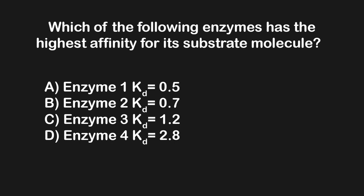Now that we've seen a couple of examples of equilibrium constants, let's dive into their utility. Let's start with an example involving KD. The question asks: which of the following enzymes has the highest affinity for its substrate molecule? The answer choices include KD values for various enzymes. Let's think about high KD versus low KD. Remember, the D in KD describes dissociation — so this is a dissociation constant. The higher the KD value, the higher the dissociation.